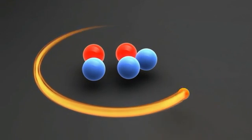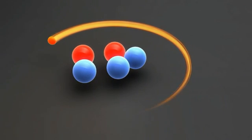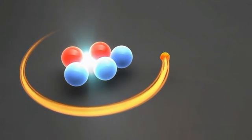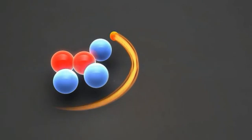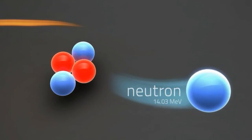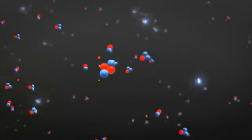D2T fusion yields significantly more energy than D2D, 75% of which is in the form of an energetic neutron that can be used to make heat, and then electricity. The remaining energy is carried away by harmless helium gas.